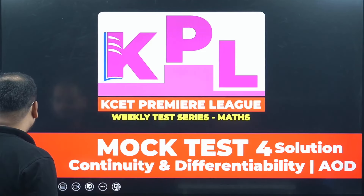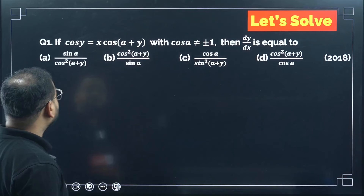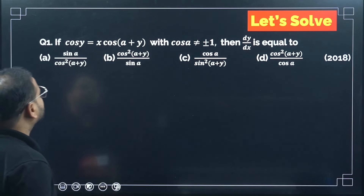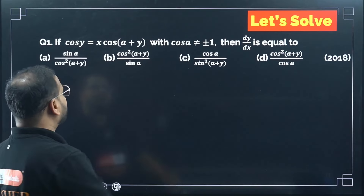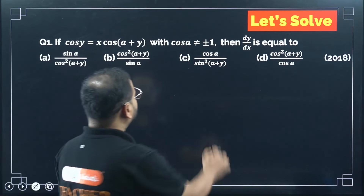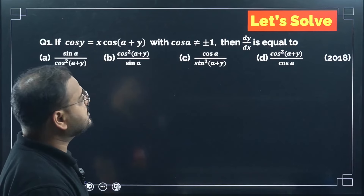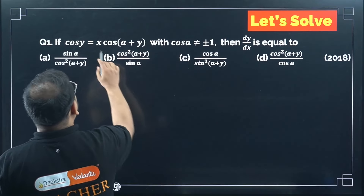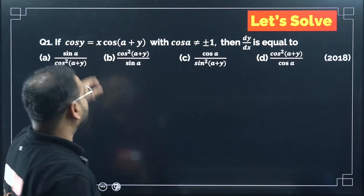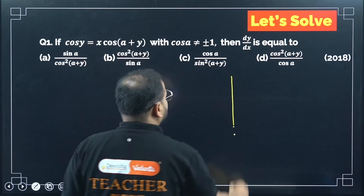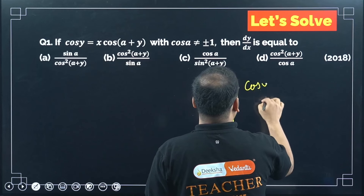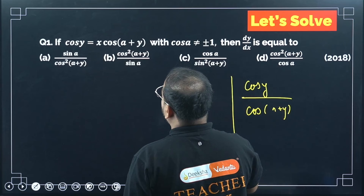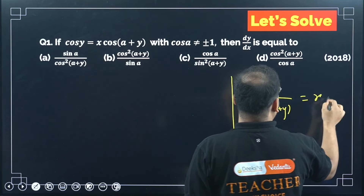Question number 1: If cos y equals x·cos(A+y), with cos A not equal to ±1, find dy/dx. I can take cos(A+y) in the denominator, giving cos y upon cos(A+y) equals x. Now, if I differentiate this, I have to use the quotient rule.